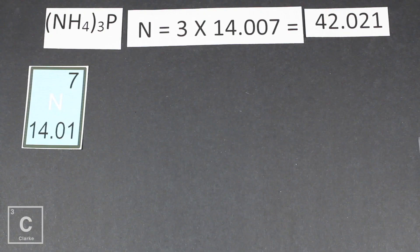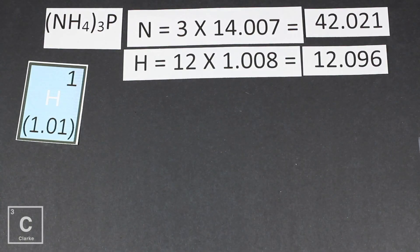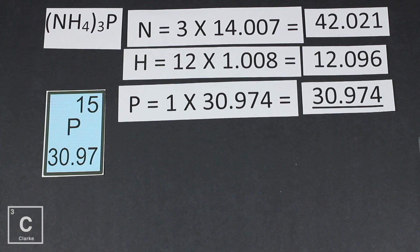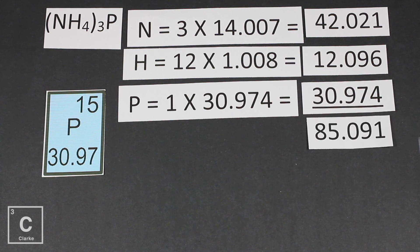So let's start with nitrogen. We've got to distribute that three. So we have three nitrogens. So three times 14.007. That's 42.021. Okay, so now if we look at hydrogen, we've got 12 of them because four times three is 12. The mass of hydrogen is 1.008. When we multiply that, we get 12.096. Phosphorus, we have one of those, and its mass is 30.974. And so we still have 30.974. When we add all three of those numbers together, we get 85.091.